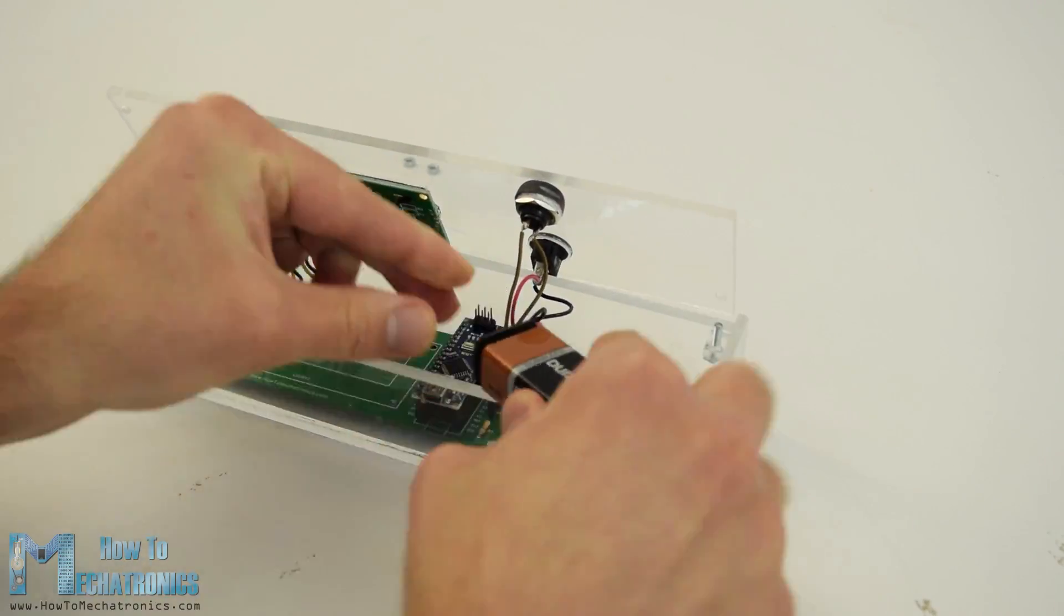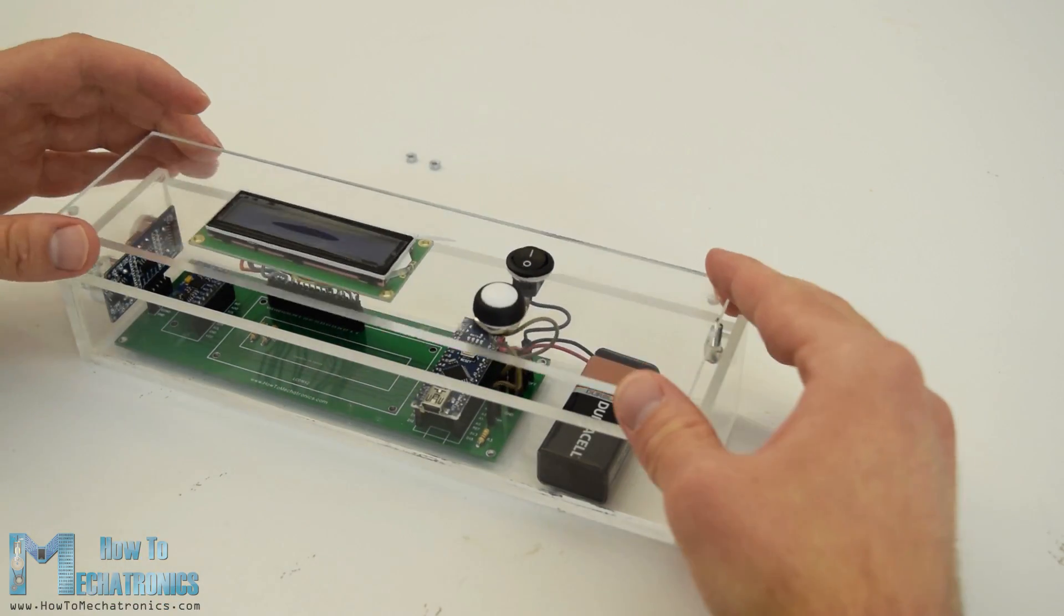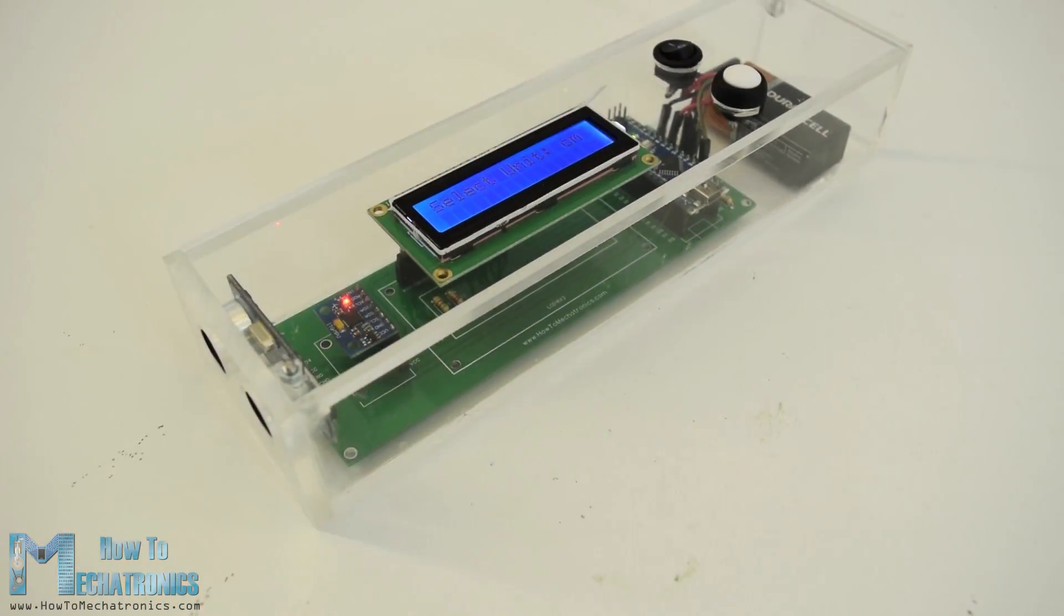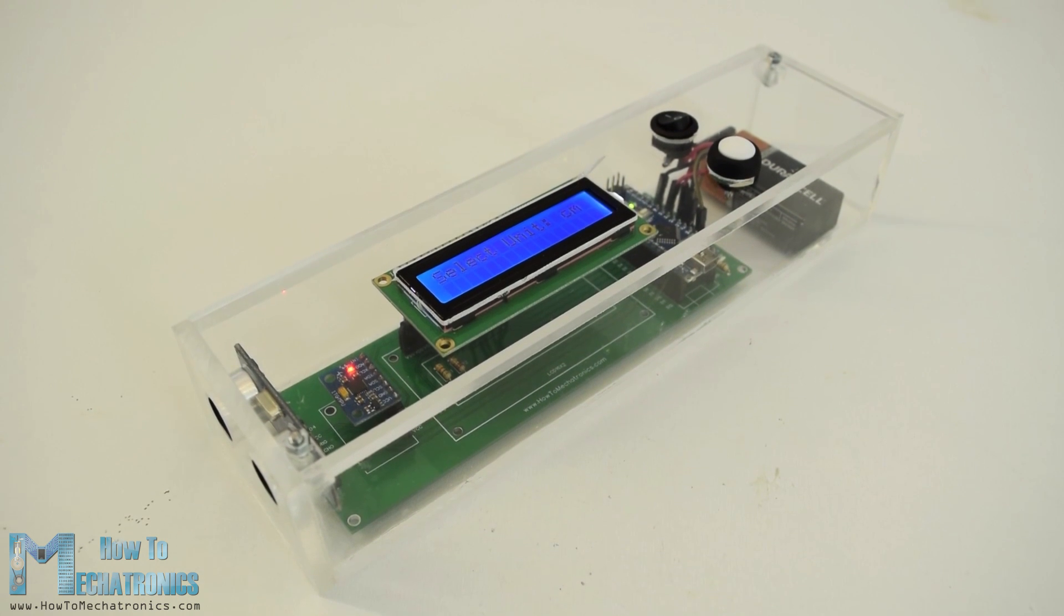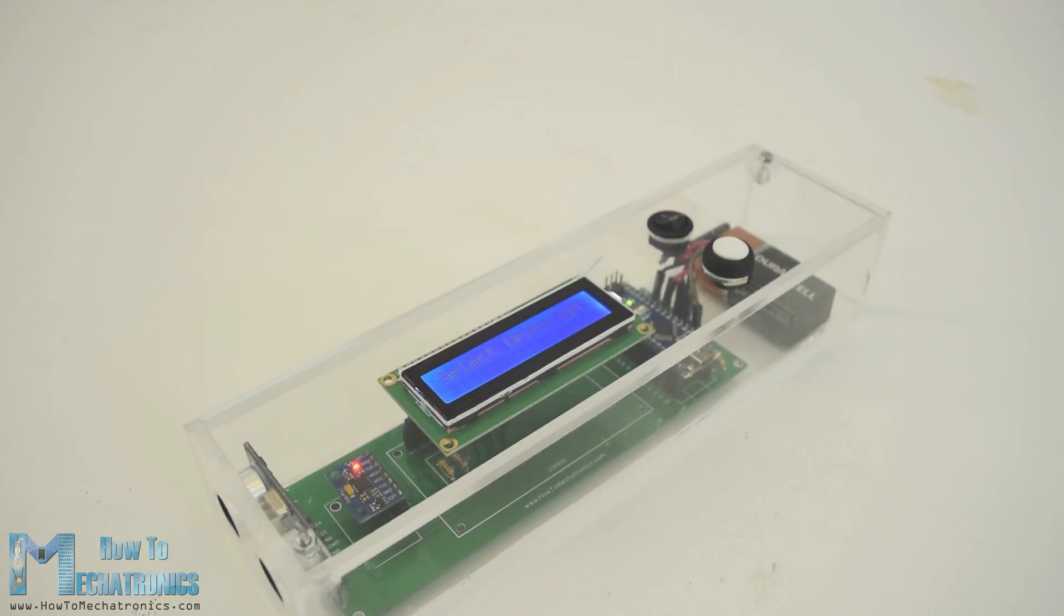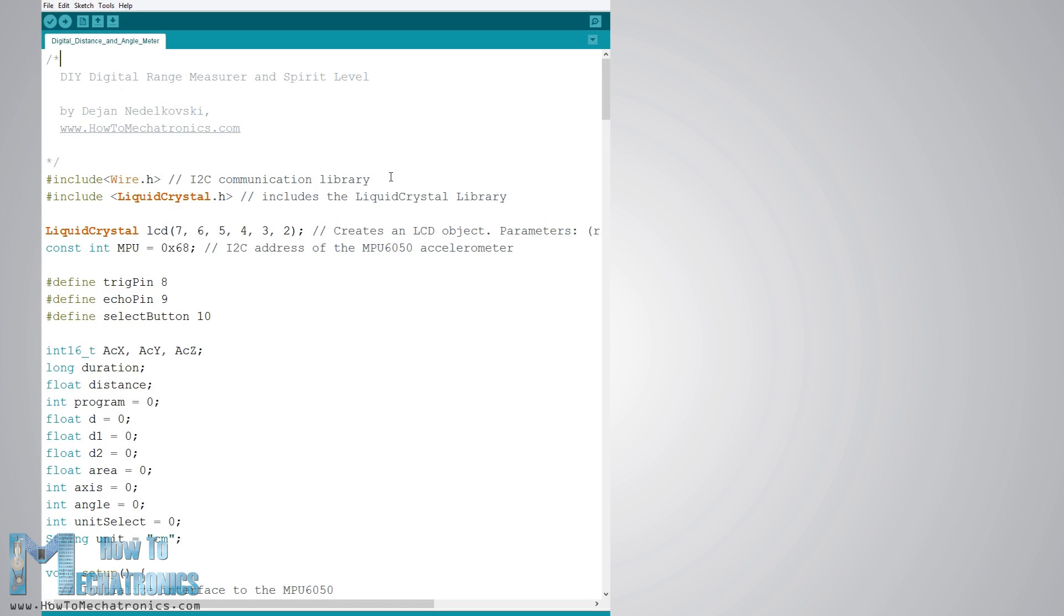Lastly, I inserted the 9V battery to the connector and secured the top panel with the nuts. And that's it, the project is done but what's left in this video is to explain how the program works. So let's take a look at the Arduino code.